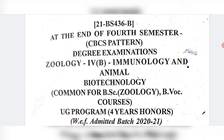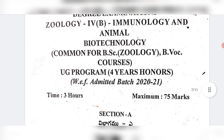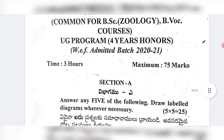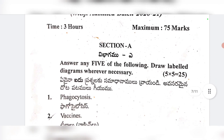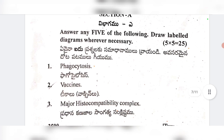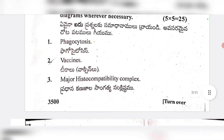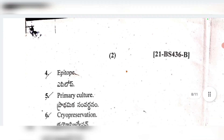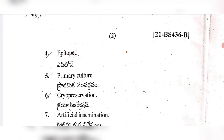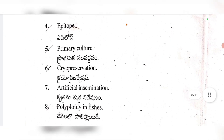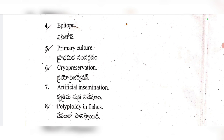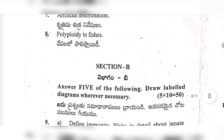To save time and avoid lengthy videos, let's get into the topics in short. The short answer questions cover: phagocytosis, vaccines, major histocompatibility complex, epitopes, primary culture, cryopreservation, artificial insemination, and polyploidy in fishes.